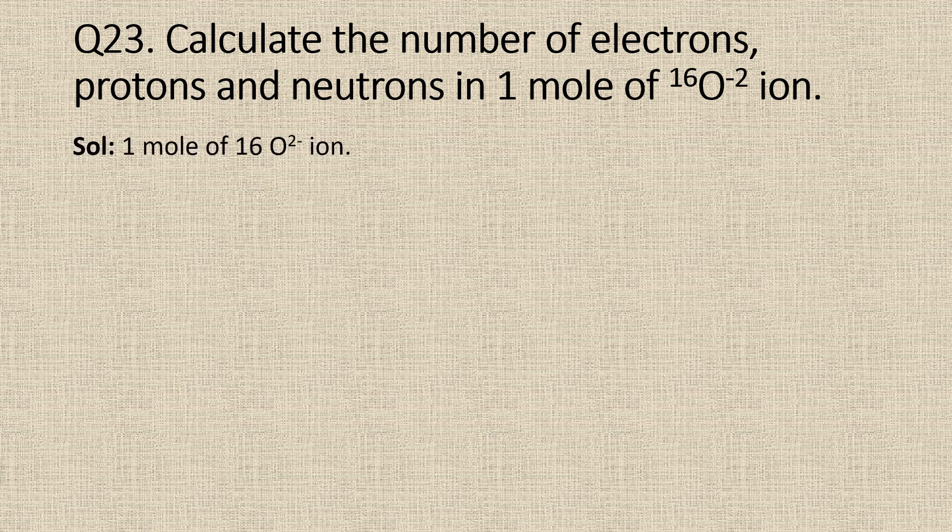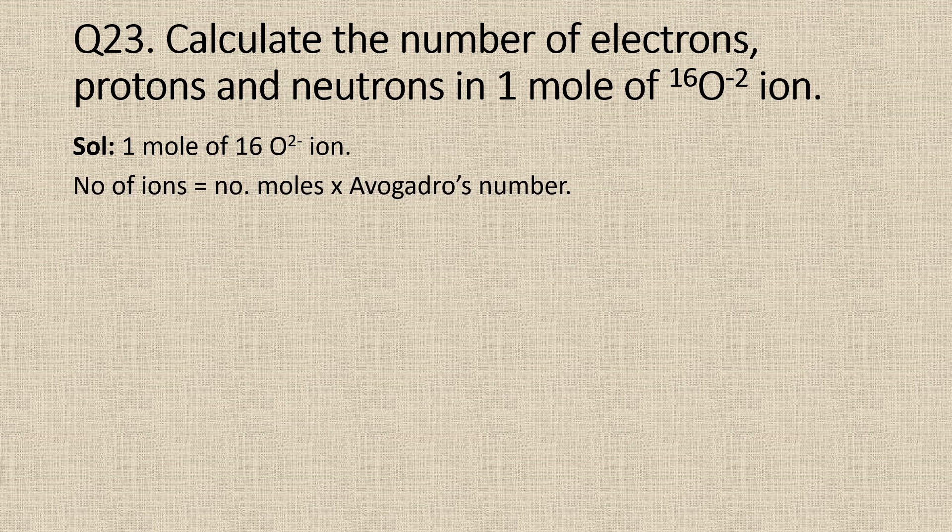One mole of O2 minus ion contains Avogadro's number of ions. So the total number of ions is equal to Avogadro's number of ions.